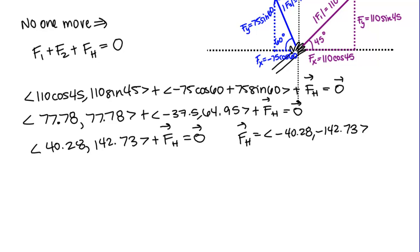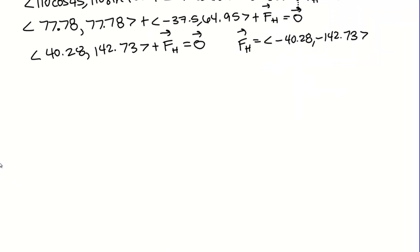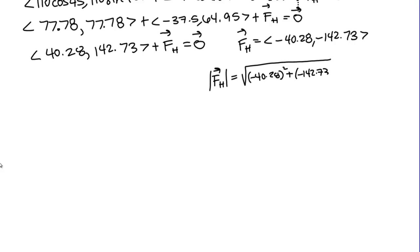Let's find the magnitude first, as that's probably the easier thing to do. The magnitude is found the usual way: the square root of (−40.28)² plus (−142.73)². If you work that out, you should get approximately 148.3 — so the magnitude of Hudson's required force is about 148.3 pounds.